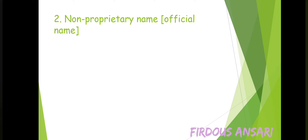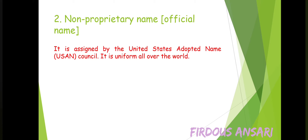Secondly, checking out the non-proprietary name, also known as the official name. It is assigned by the United States Adopted Name Council, that is the USAN Council. It is uniform all over the world. This non-proprietary name is the name accepted by the competent scientific body and the scientific authority.